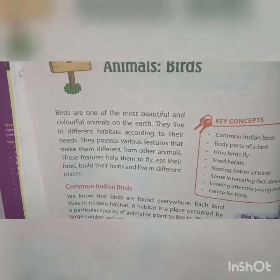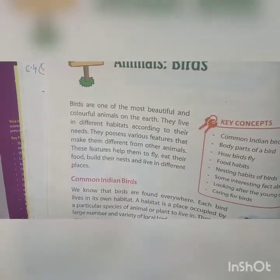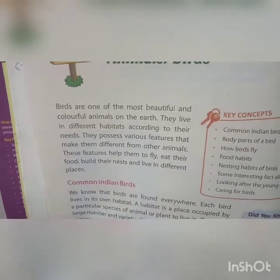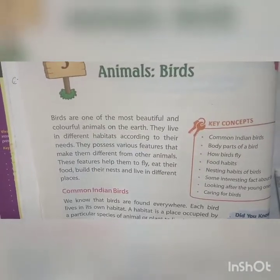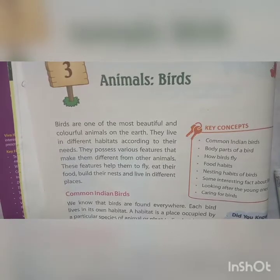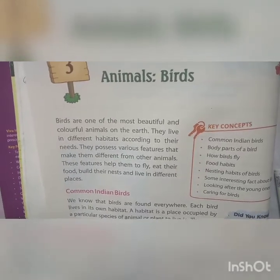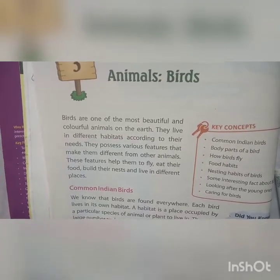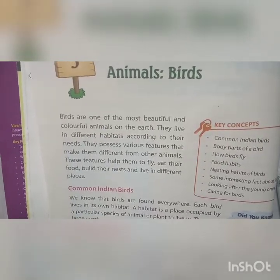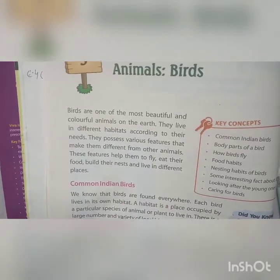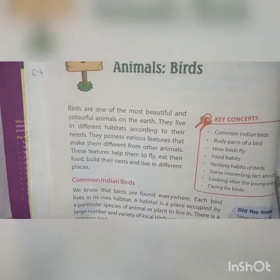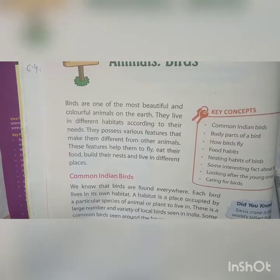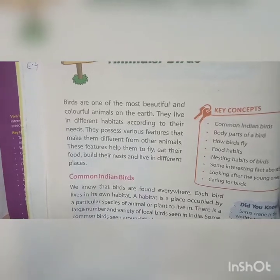In this chapter, we will learn about the different birds — the common Indian birds that are there in the environment. Then we have to go through the body parts of a bird. Then we will know about the eating habits of the bird as well as the habitats of the bird. Then how the birds fly, how they look after their young ones, and how we should take care of birds.